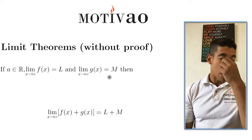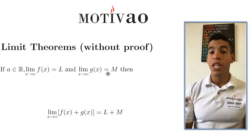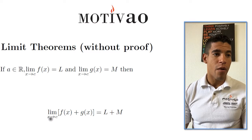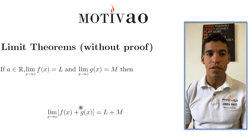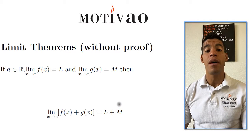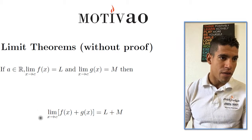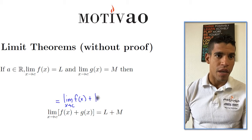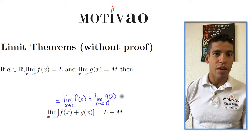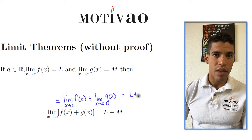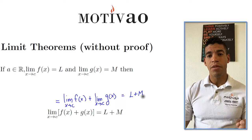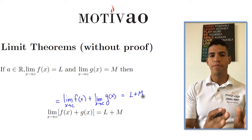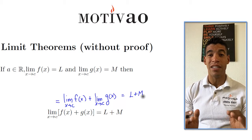The first theorem is very intuitive: the limit as x approaches c of the sum of my functions is equal to the sum of the limits. So the limit of f(x) plus g(x) equals the limit of f(x) plus the limit of g(x), which equals L plus M. This theorem is called linearity — the sum of the limits is the limit of the sum — and you're going to see that in calculus a lot.